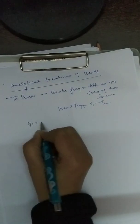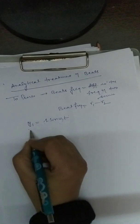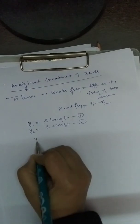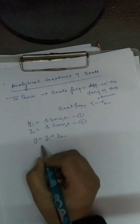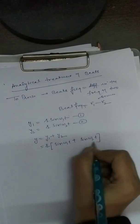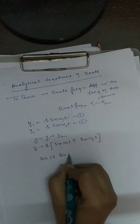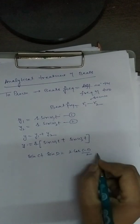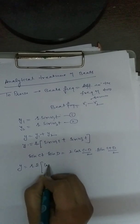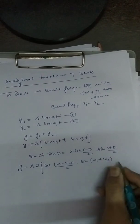For this, let us suppose y1 = r sin(ω1·t) is the wave coming from the first source, where r is the amplitude and ω1 is the angular frequency. From the second source it is y2 = r sin(ω2·t). This is equation 1 and equation 2. After superposition, y = y1 + y2 = r[sin(ω1·t) + sin(ω2·t)]. Now I will apply the sin C + sin D formula: sin C + sin D = 2 cos((C−D)/2) · sin((C+D)/2).